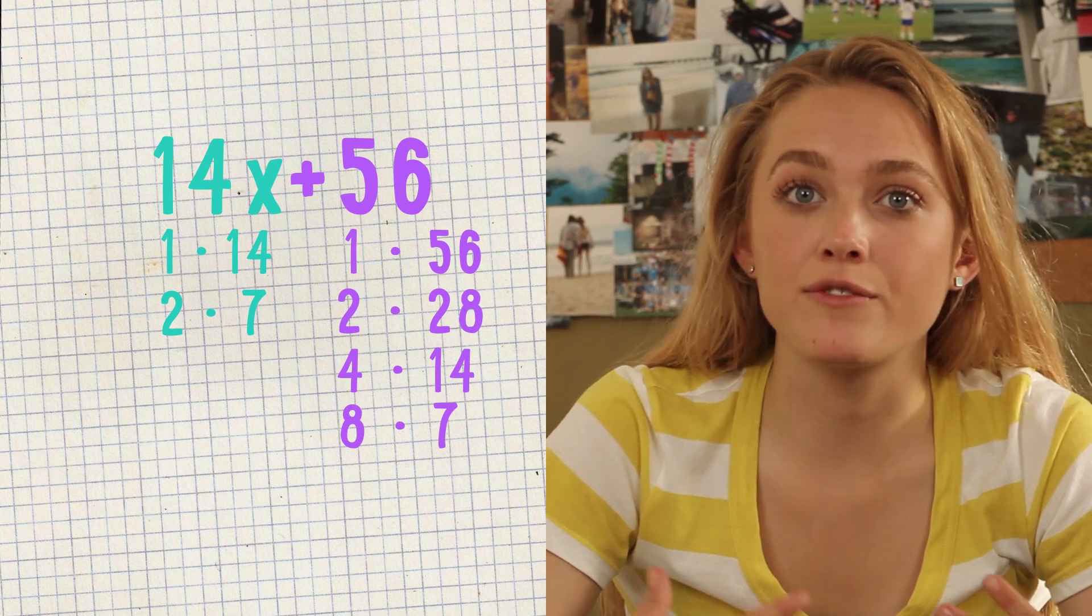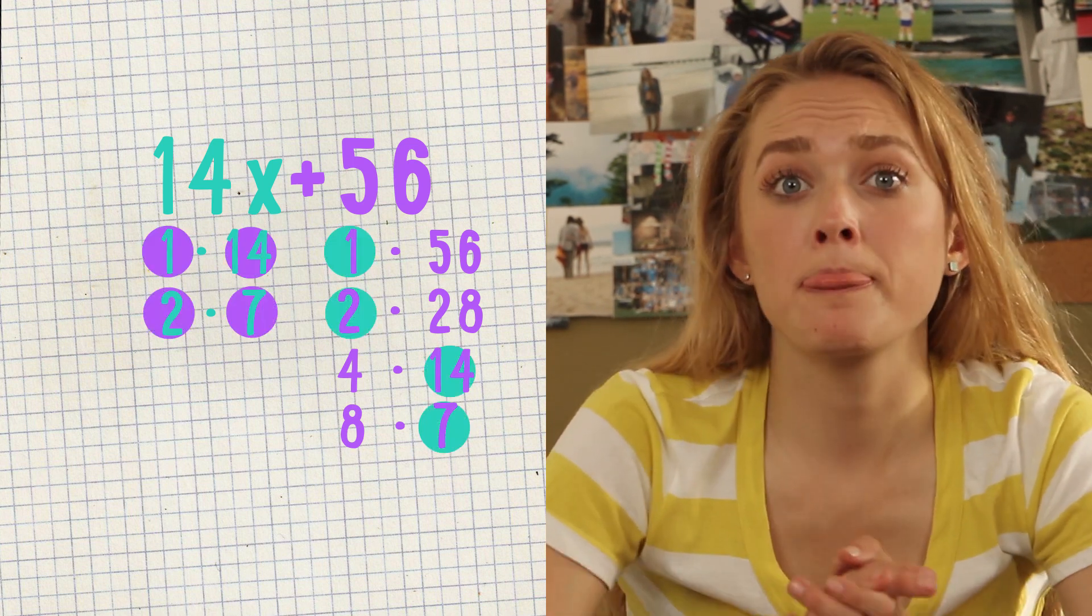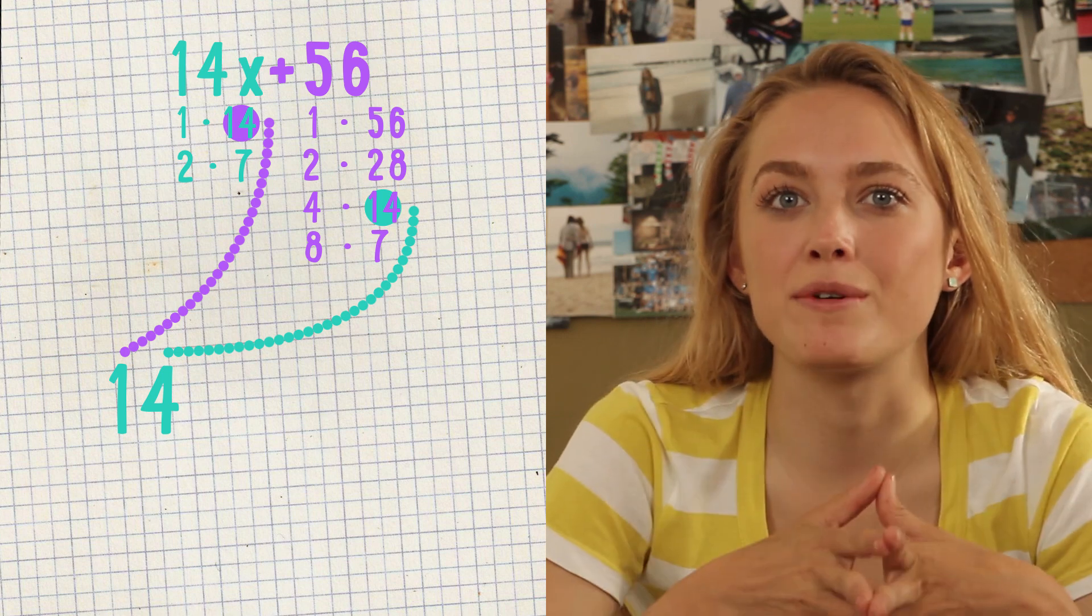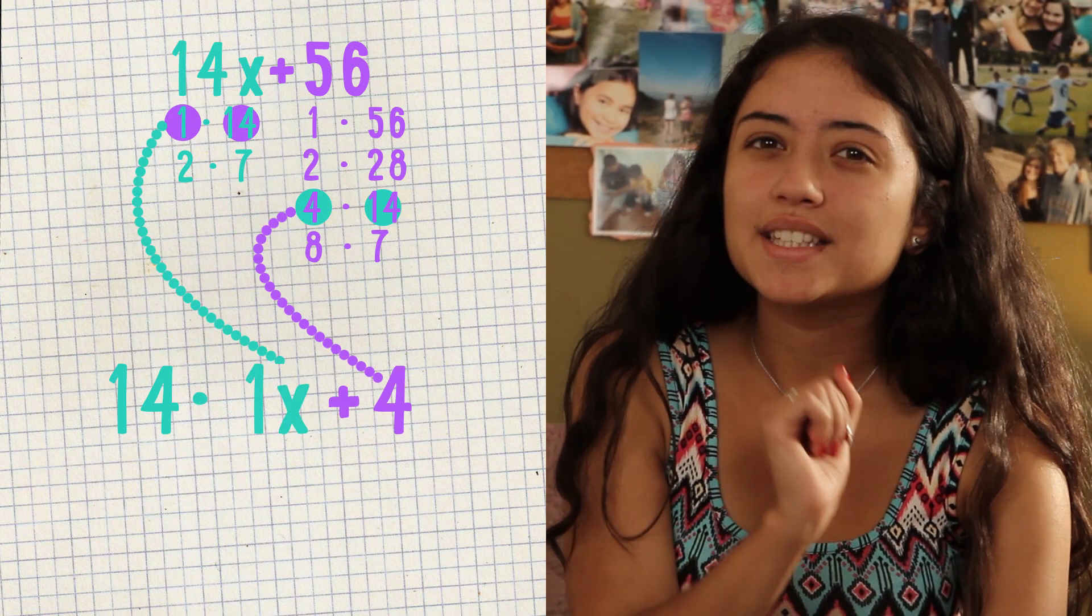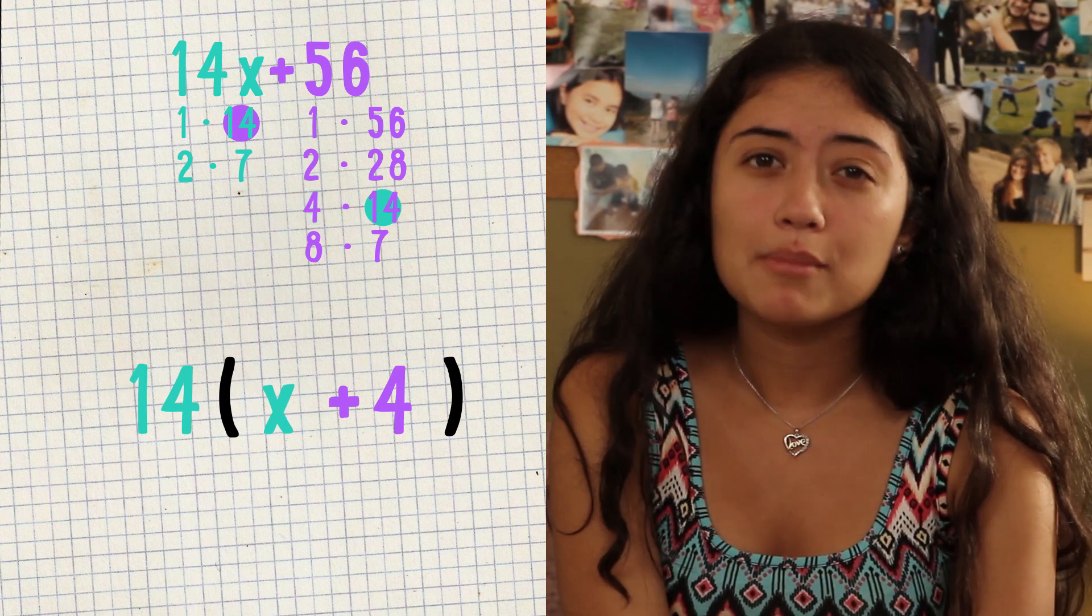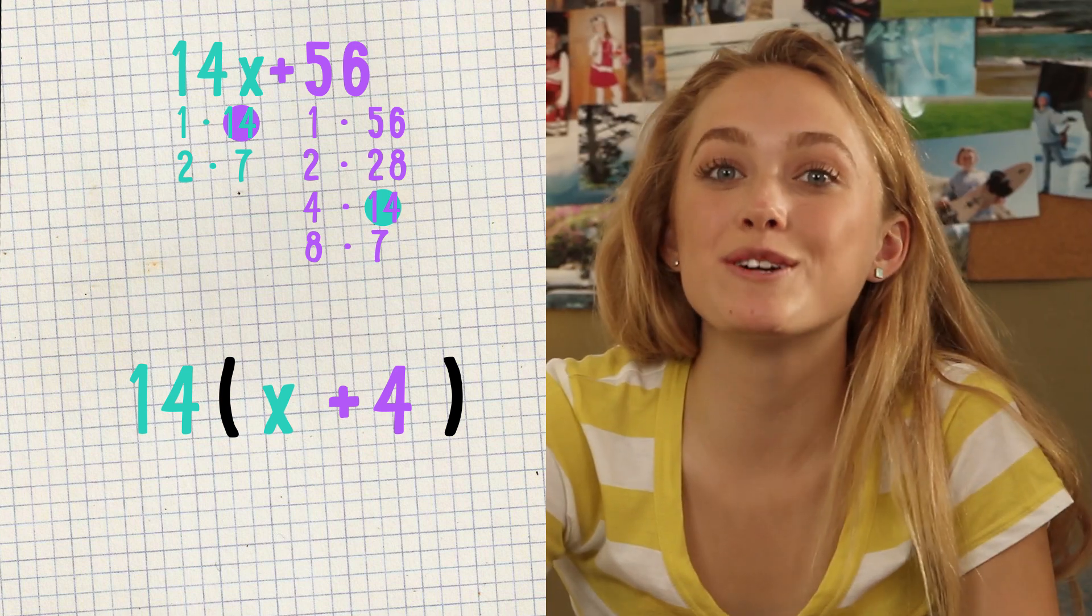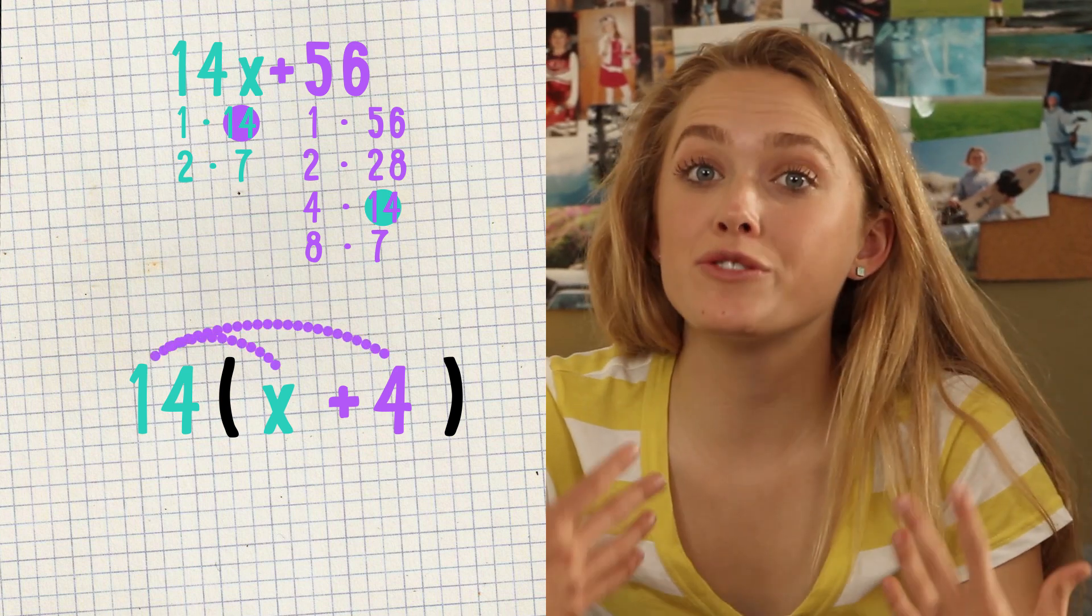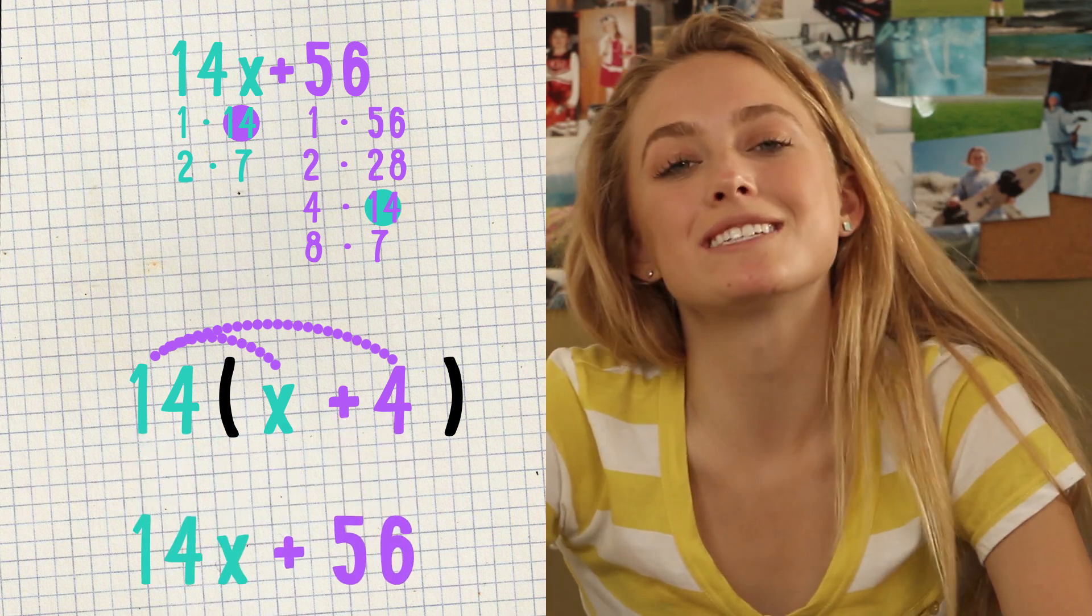So the common factors of 14 and 56 are 1, 2, 7, and 14. Let's use 14 because it's the greatest common factor. Now we can place the 14 on the refrigerator by itself, but since we did that we have to put parentheses around the x plus 4 because both of those numbers are in timeout mode together. Once the numbers learn to behave, we can fairly redistribute the 14 to the x plus 4 and we end up in the same place: 14x plus 56.